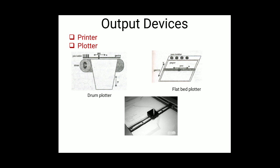Hard copy output devices provide the user with a physical copy of what is displayed on the screen. Hard copy can be obtained using printers and plotters. Soft copy is obtained using CRT, LCD, LED, and projectors. These are the input and output devices in CAD/CAM/CAE.